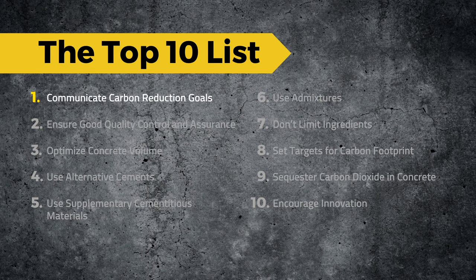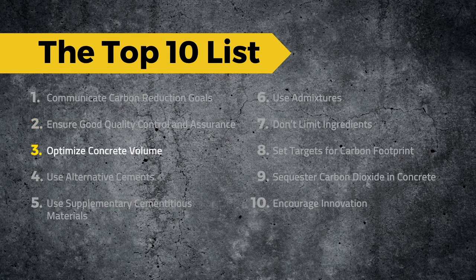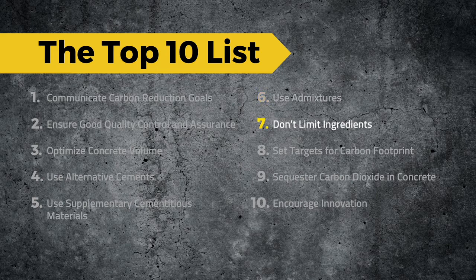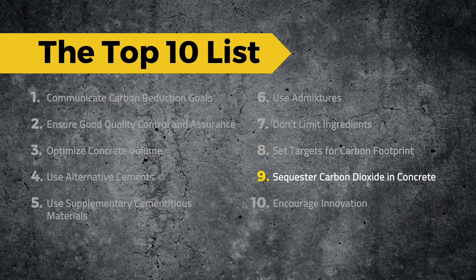1. Communicate carbon reduction goals. 2. Ensure good quality control and assurance. 3. Optimize concrete volume. 4. Use alternative cements. 5. Use supplementary cementitious materials. 6. Use admixtures. 7. Don't limit ingredients. 8. Set targets for carbon footprint. 9. Sequester carbon dioxide in concrete. 10. Encourage innovation.